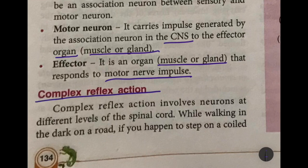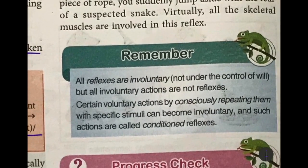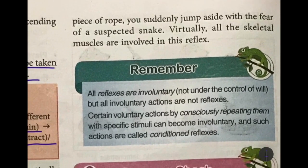A complex reflex action involves neurons at different levels of the spinal cord. For example, if you are walking on a dark road and stamp on a coiled rope, you might think it is a snake, and virtually all the skeletal muscles become involved in this reflex. That is a complex reflex action. This is all for today — stay safe and God bless you.